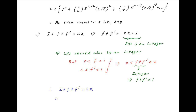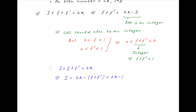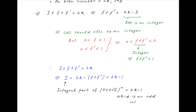Therefore, the result i + f + f' = 2k becomes i = 2k - (f + f') = 2k - 1. Therefore i, which is the integral part of (5 + 2√6)^n, is equal to 2k - 1, which is clearly an odd integer. And this is the required result.